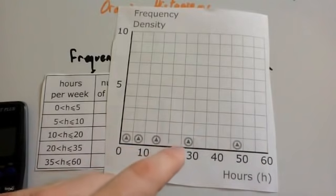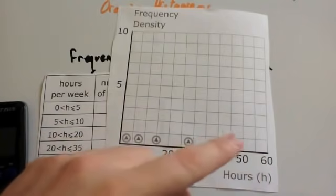So 0 to 60. They've gone 0, 5, 10, 15, 20, 25, 30, 35, 40, 45, 50, 55, 60.